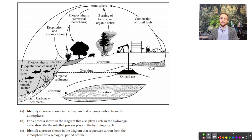Now we'll look at a diagram — a visual model of the carbon cycle. The first question asks to identify a process shown in the diagram that removes carbon from the atmosphere. Look for an arrow leaving the atmosphere. Right away we see two: photosynthesis, and an arrow going to CO2 in water. Photosynthesis is easier to identify and straightforward. CO2 dissolving into water may need extra detail. Either works as an answer for this identify prompt.